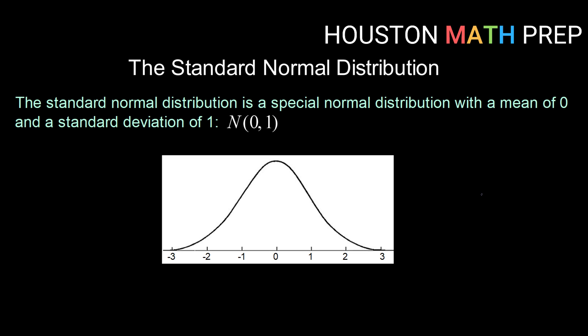So this distribution, because it is normal, has all of the characteristics we just talked about, but it is a special distribution with a mean of zero and a sigma or a standard deviation of 1.